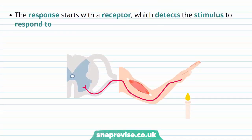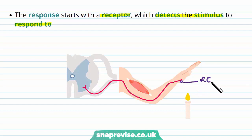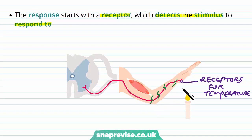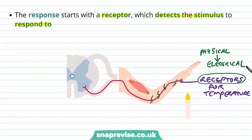First of all, the response has to begin with a receptor, as most responses do. The receptor detects the stimulus or the change in a stimulus, and this is what we will be responding to. In our hand we have receptors for temperature, and these receptors are modified so that they can turn whatever they're detecting into an electrical signal which passes into our nervous system. That's what a receptor does — it detects a physical change and turns it into an electrical signal. This can be done for touch, temperature, light, pressure, and anything like that.